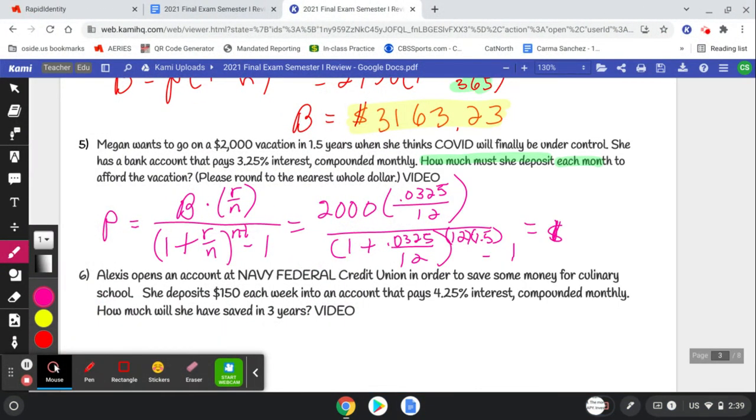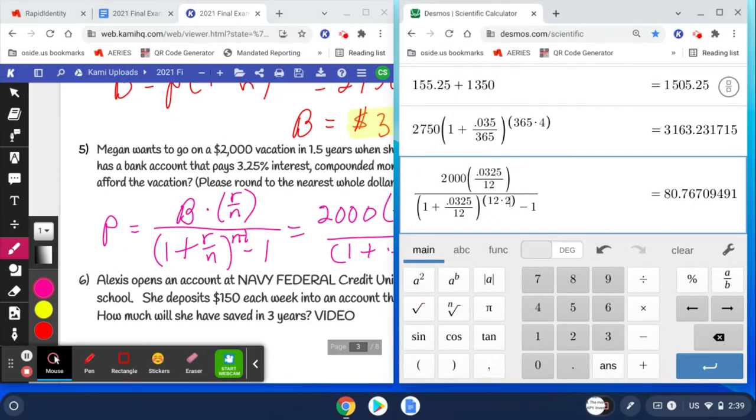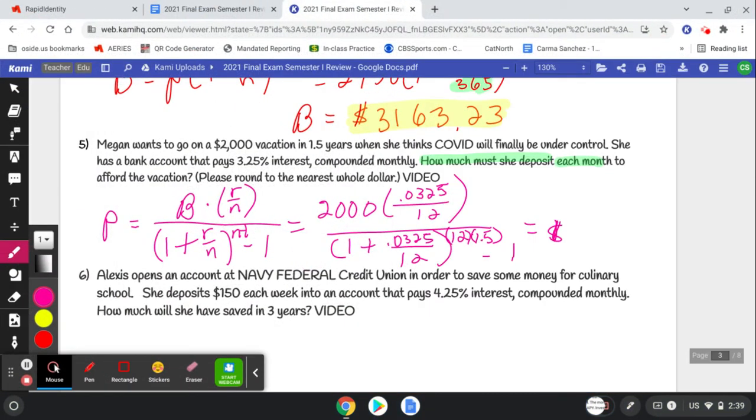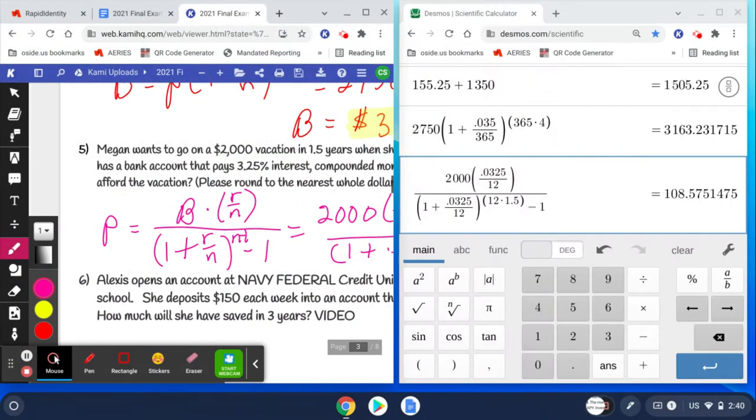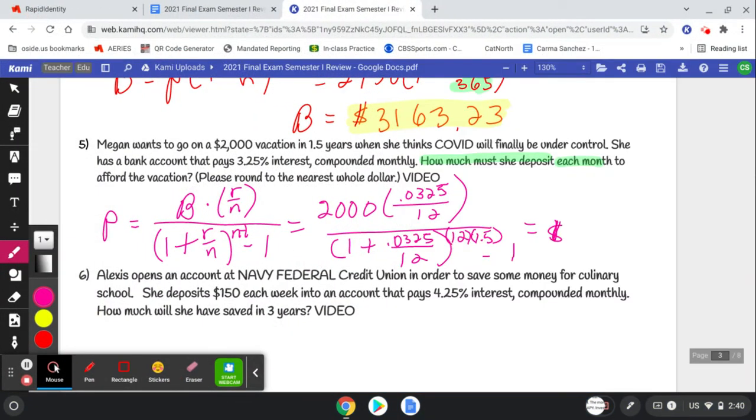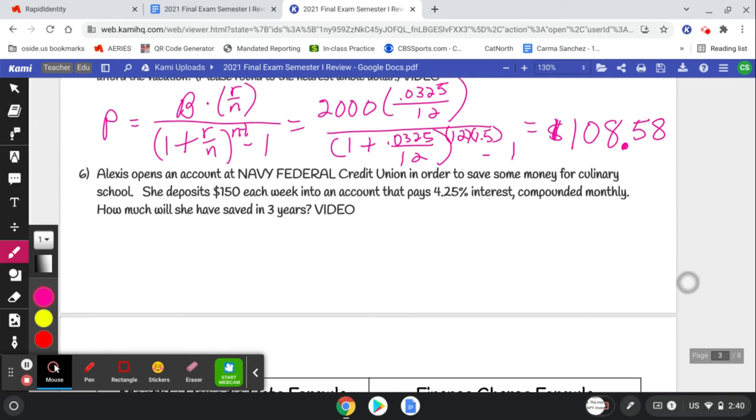Let's see how much I have to save to go on a $2000 vacation. So $2000 vacation, 1.5 years, 3.25% interest compounded monthly. Just want to double check my numbers: 325 monthly and 1.5. So we're looking good. So $108.58 rounded must be saved monthly in order to go on that vacation.